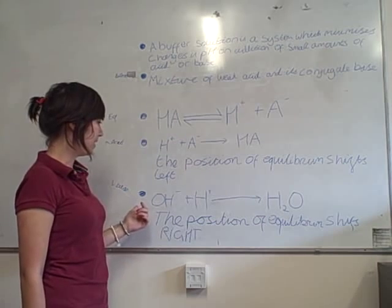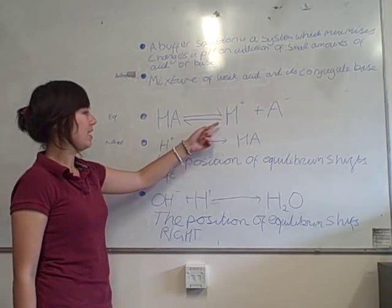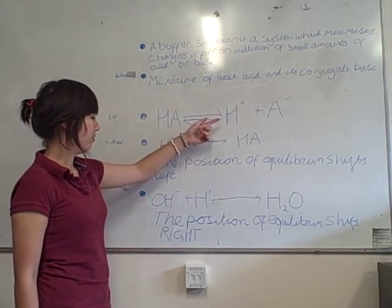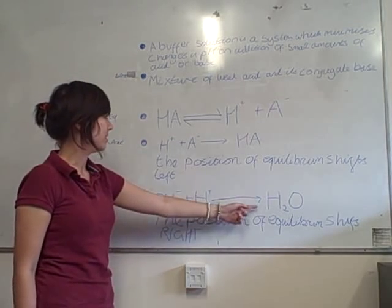And then when a base is added, which is OH minus, the OH minus will react with the H plus. And then the H plus will form water, which is H2O. So OH minus plus H plus makes H2O.